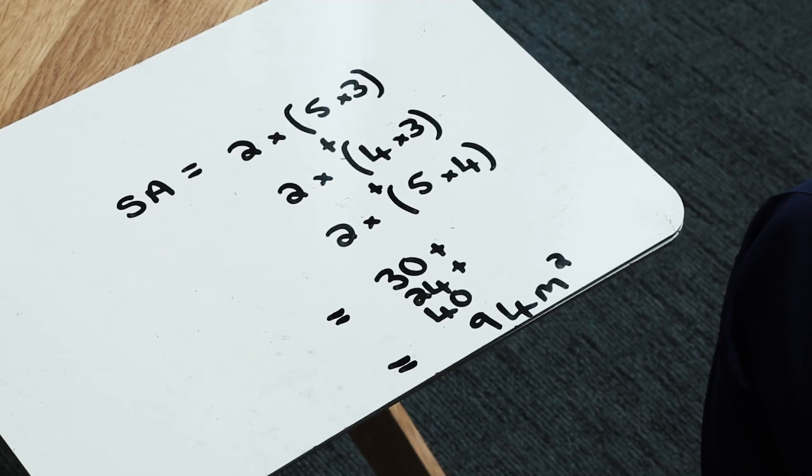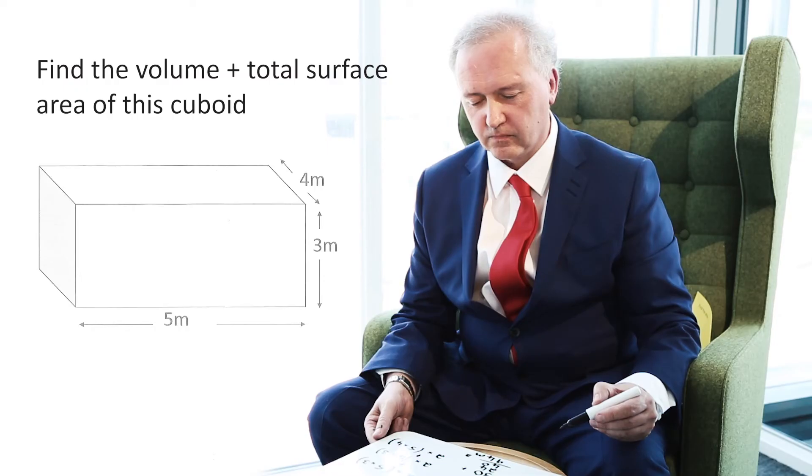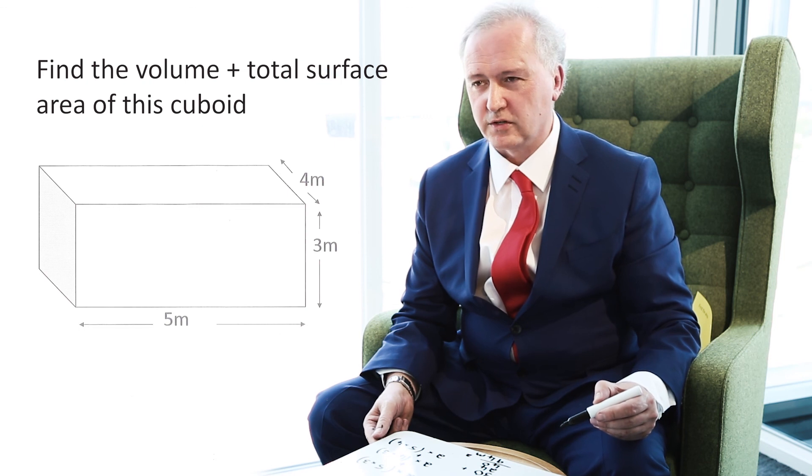So I've got 2 lots of the 5 by 3. I've got 2 lots of the 4 by 3. 2 lots of the 5 by 4. Keep it nice and straightforward. Add together my three results and I end up with a total surface area of 94 meters squared. And that's volume and total surface area of a cuboid.